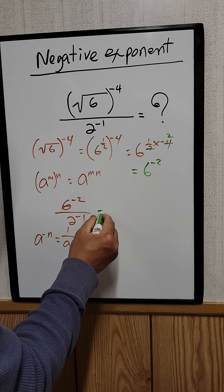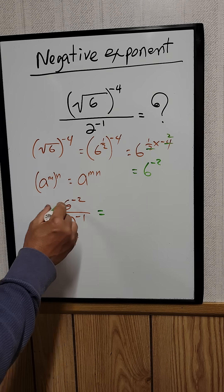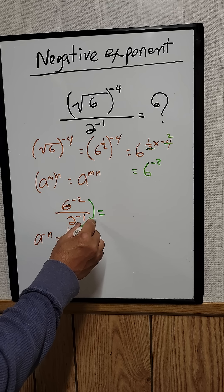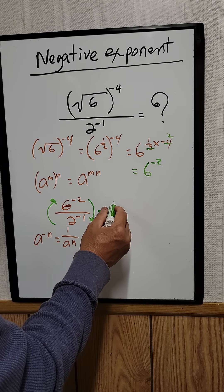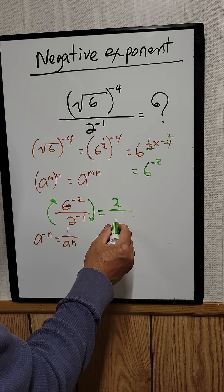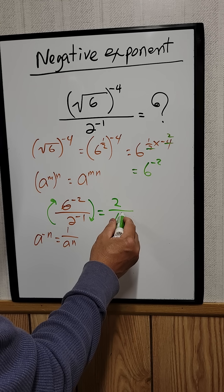Now by applying this rule, all you need to do is just flip-flop this. So basically this becomes that and that becomes that. You can rewrite that as 2 divided by 6 squared.